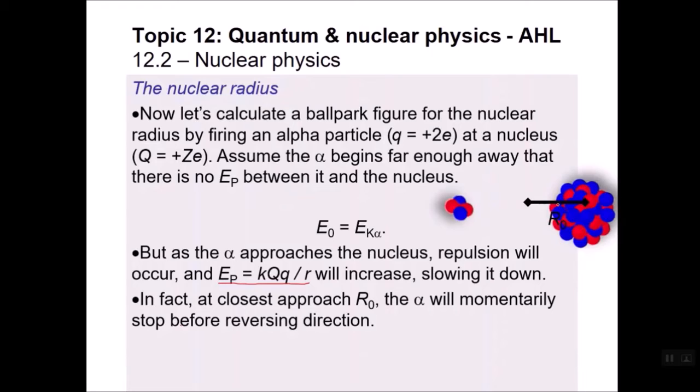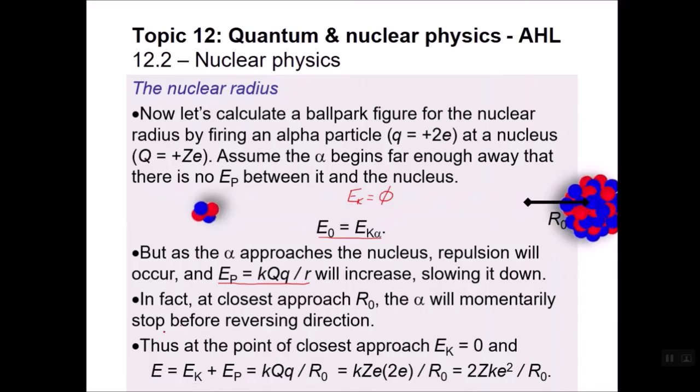Now at this moment, at R-naught, the alpha particle will stop just for an instant right here before it takes off back. So at that moment, the kinetic energy of this is equal to zero. It says so right here. The kinetic energy is equal to zero. So in our equation, we have the overall energy is kinetic energy plus potential energy. Well, this is zero. So our potential energy is given by the Coulomb energy.